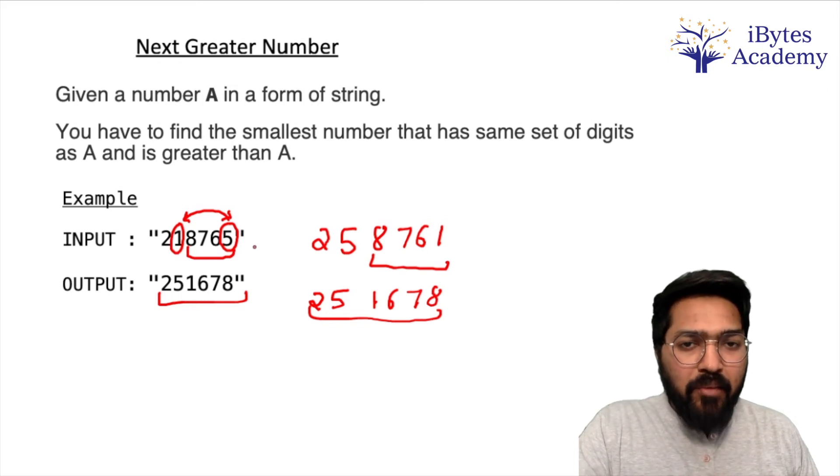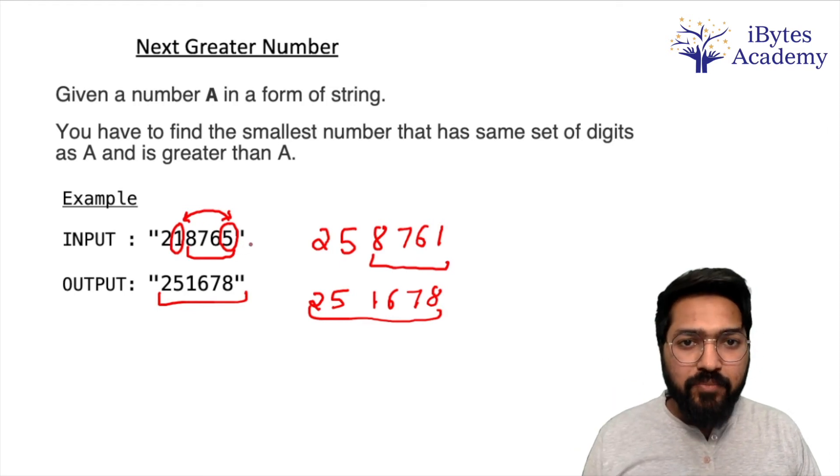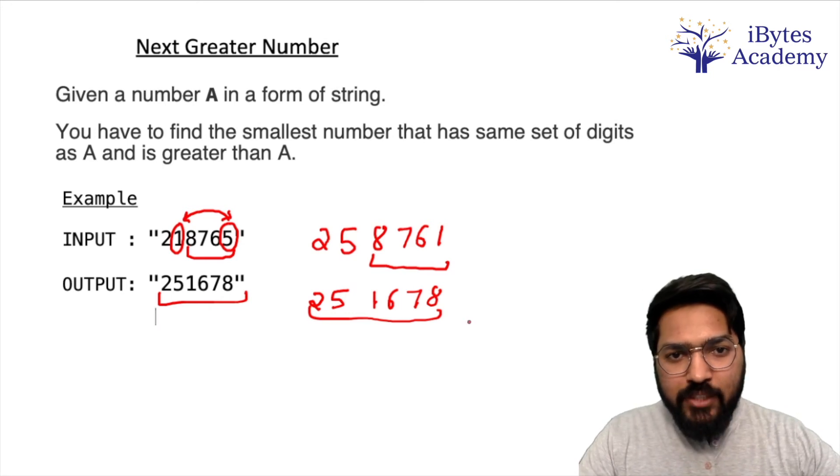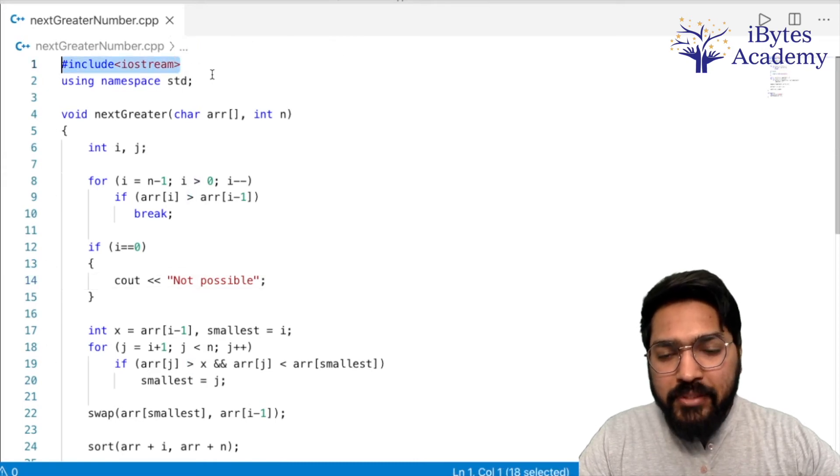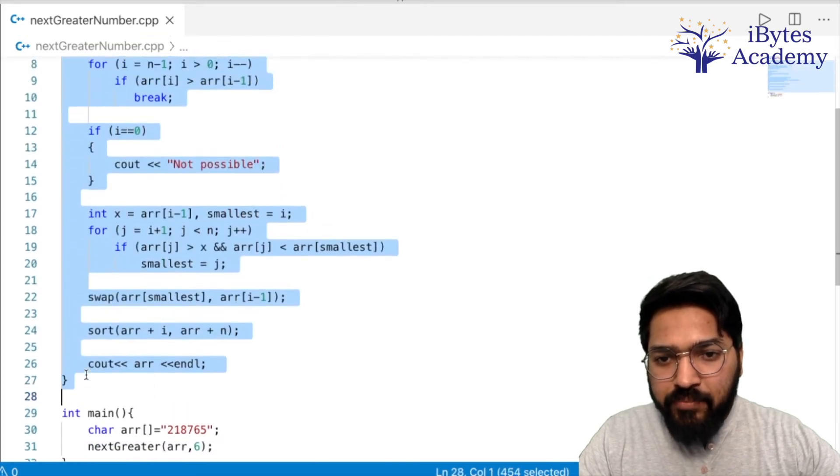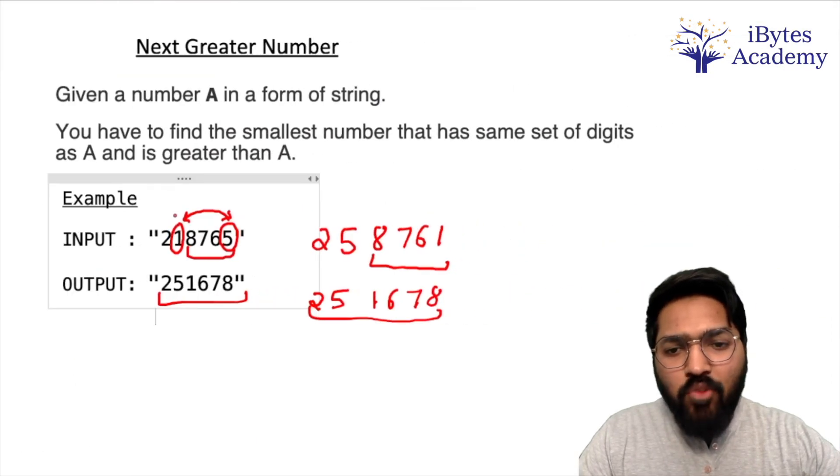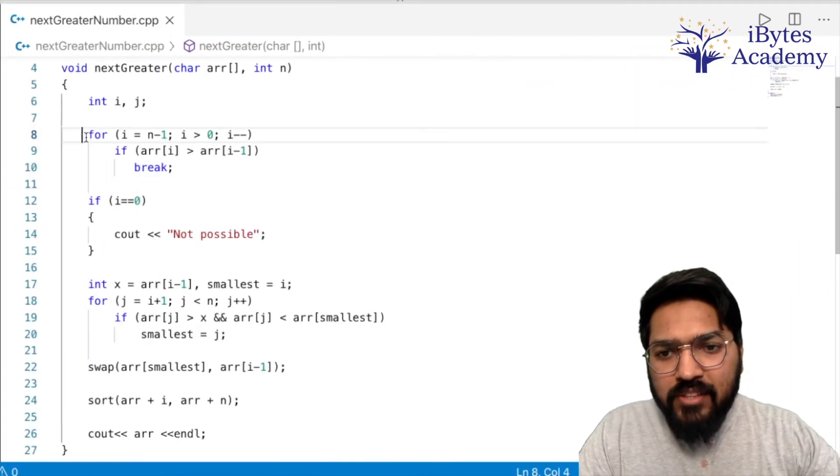So how will we implement this? We will first convert the input string to a character array and pass this character array to the function we will write. Let me quickly show you the code. I have created this file nextGreaterNumber.cpp, I have included iostream and am using namespace standard. Then this is the function. This function gets a character array and the size of that array. So if we take this input, obviously the size of my character array is going to be six.